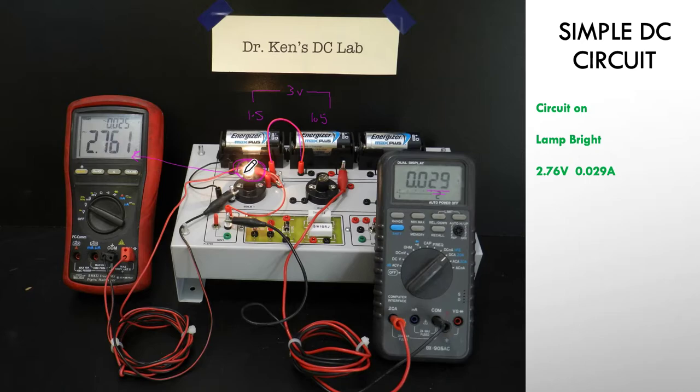It's a 2.5 volt lamp, so it is now operating well and truly at its design full voltage. So current 29 milliamps, voltage 2.671 volts, giving us a reasonably bright lamp.